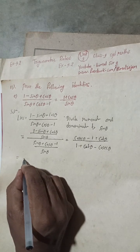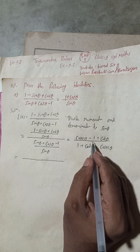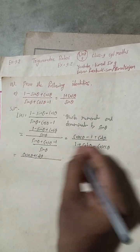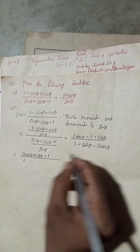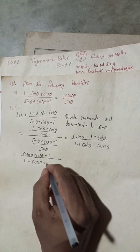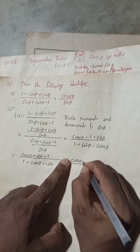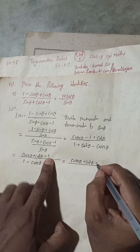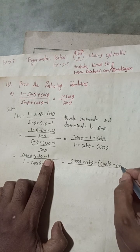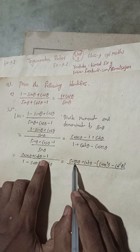Now arranging: in the numerator we have cosecθ minus 1 plus cotθ, and in the denominator 1 plus cotθ minus cosecθ. In place of 1 we can write sin²θ + cos²θ because sin²θ + cos²θ equals 1, so we substitute that in place of 1.